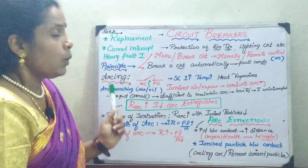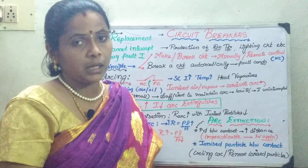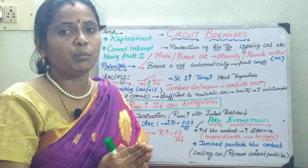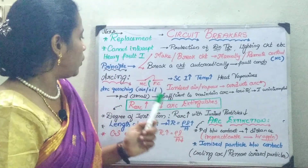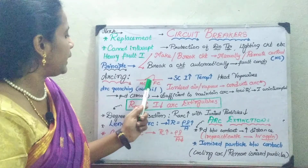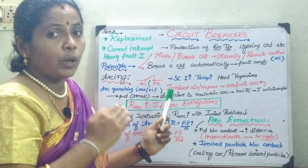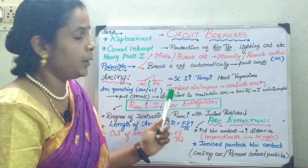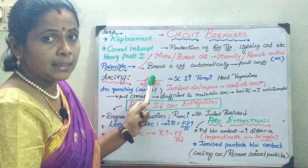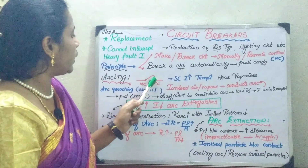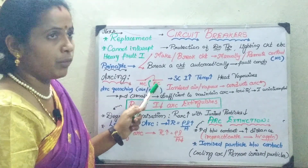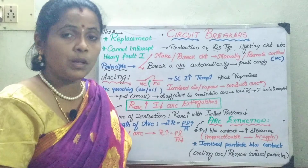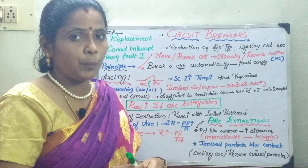Now we will see the operation of a circuit breaker. In a circuit breaker, one of the main problems is the arcing between the contacts. As we all know, a circuit breaker has two contacts: a moving contact and a fixed contact. Whenever a fault or short circuit occurs, a heavy fault current passes through. In order to interrupt it, the moving contact moves apart from the fixed contact, and the arcing medium flows through to quench the arc as soon as possible, protecting the power system components against damage.